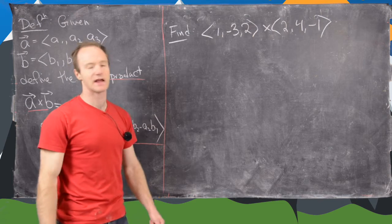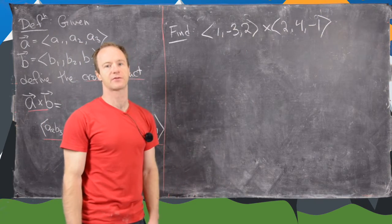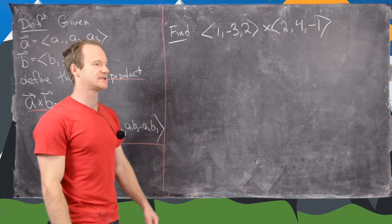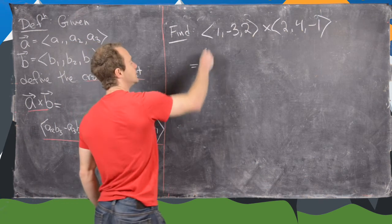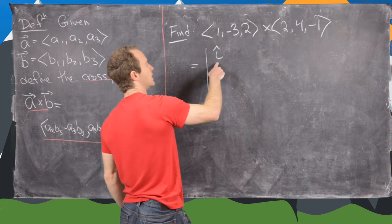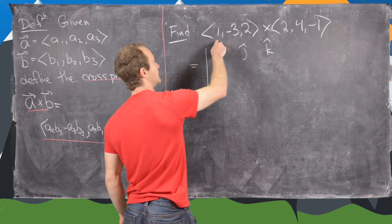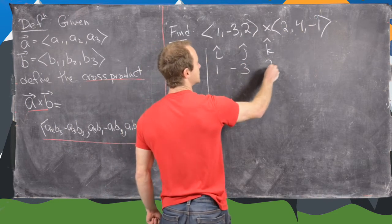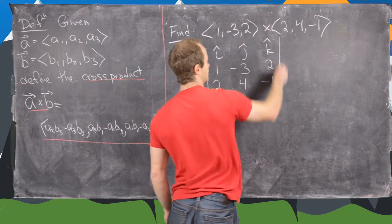Let's finish with an example. We want to find the cross product of (1, −3, 2) with (2, 4, −1). Using the determinant method, we set up the 3×3 matrix with i, j, k along the first row, then (1, −3, 2) in the second row, and (2, 4, −1) in the third row.